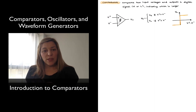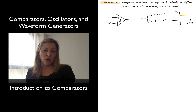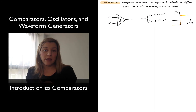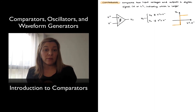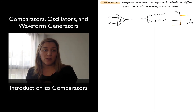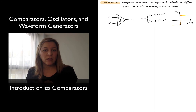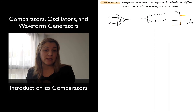It's worth mentioning that even though comparators are similar in structure to an op-amp, they are not equivalent. Even though we can use op-amps as comparator circuits by simply running them in open loop between the positive and negative saturation regions, those are going to be low-performing comparators. The reverse is not going to be true — meaning if you pick a comparator IC, you're not typically going to be able to use it as an op-amp.